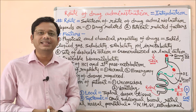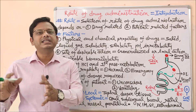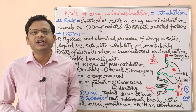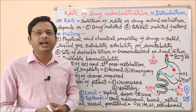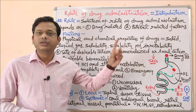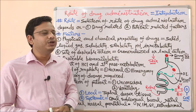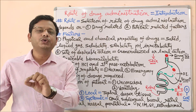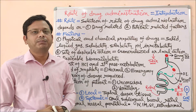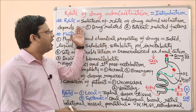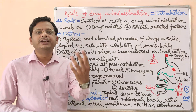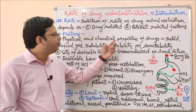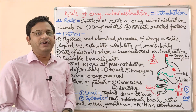Have you ever wondered why there are so many routes of drug administration? Each route exists because of the basic advantages and limitations of the others — a new route is introduced to overcome the limitations of a particular dosage form. In today's video we will discuss the factors that affect the selection of a suitable route. This is one of the lengthiest topics in pharmacology. Selection depends mainly on two factors: drug-related factors and patient-related factors.